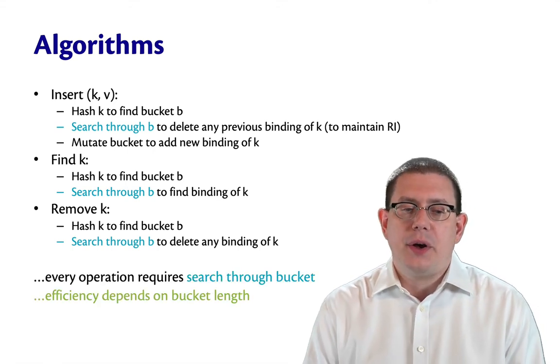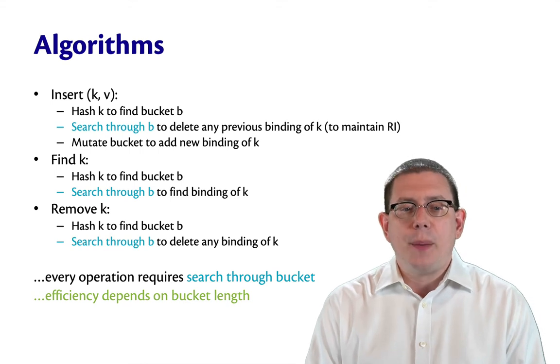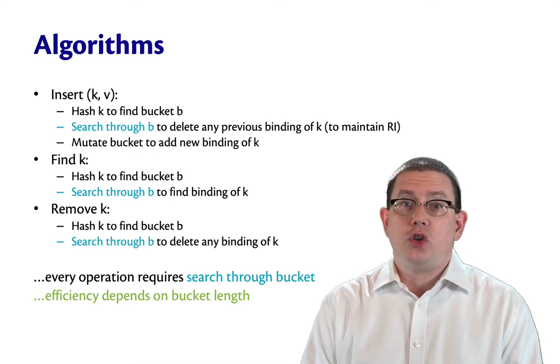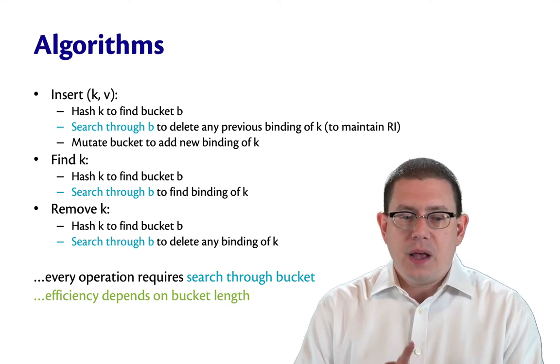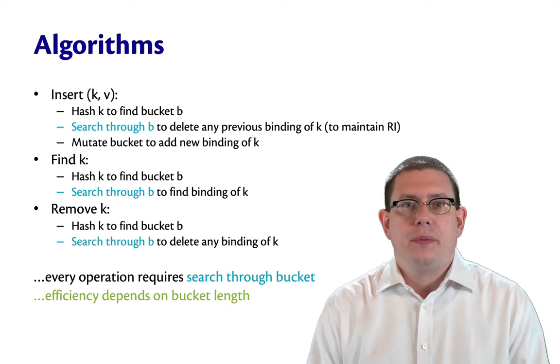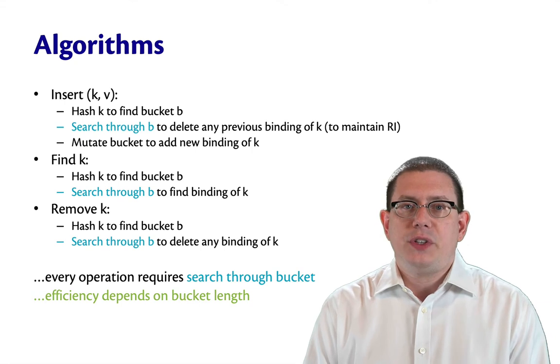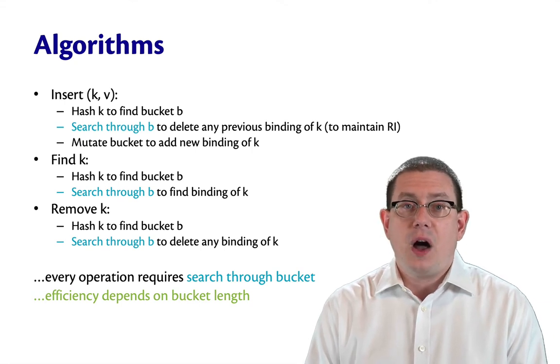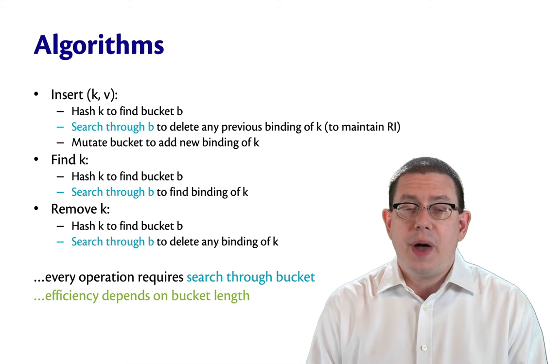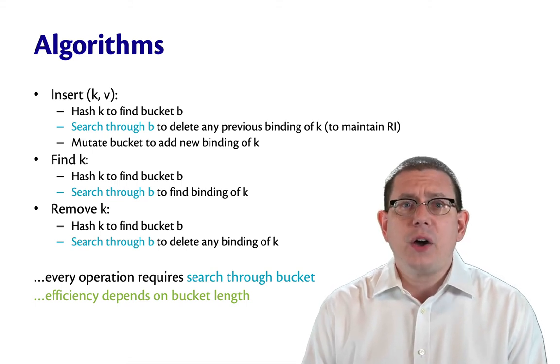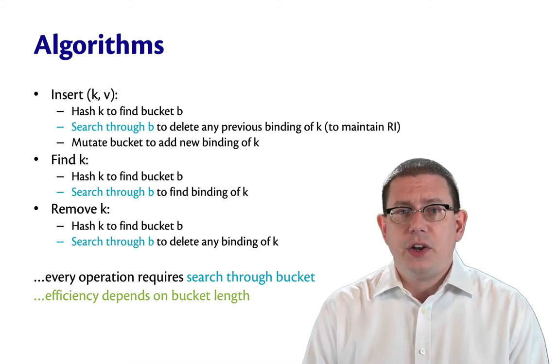Right away, what you'll probably notice is that every one of these operations requires us to search through one bucket. That's a little worrisome. We chose this representation type because we wanted to get constant time operations. But now, suddenly, we're searching through a bucket. And if we're not careful, that could turn out to be a linear time operation instead of constant.